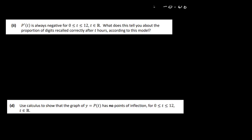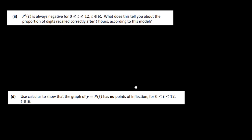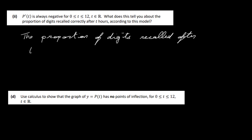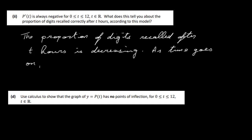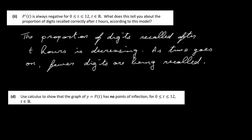The next part asks: p′(t) is always negative between 0 and 12 hours — what does this tell you about the proportion of digits recalled correctly after t hours? It tells us that the proportion of digits recalled is decreasing over time. In other words, as time goes on, fewer digits are being recalled.